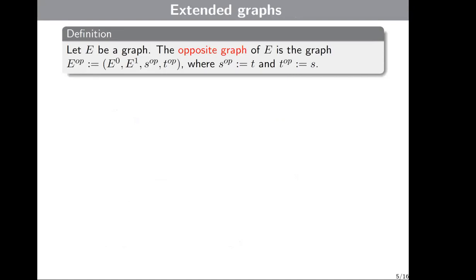Next, let's define the opposite graph. The opposite graph of graph E is also a quadruple where the sets E_0 and E_1 are the same, but the maps s and t are swapped: s_op equals T and T_op equals S. In other words, the opposite graph is a graph with the same vertices but with arrows pointing in the opposite direction.